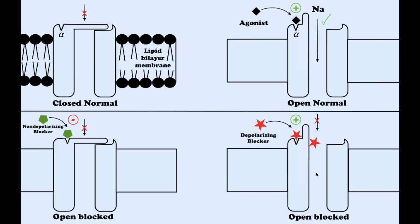Succinylcholine causes initial depolarization with fasciculation and then persistent depolarization of the channel, which leads to muscle relaxation. Non-depolarizing drugs are antagonists and bind to the receptor to prevent opening of the channel. They subsequently prevent acetylcholine from binding, and as two acetylcholine molecules are required for depolarization, only one receptor needs to be occupied by the antagonist to be effective.